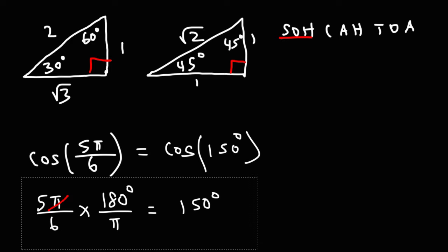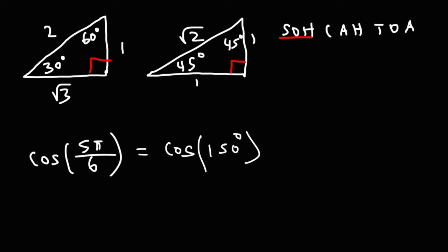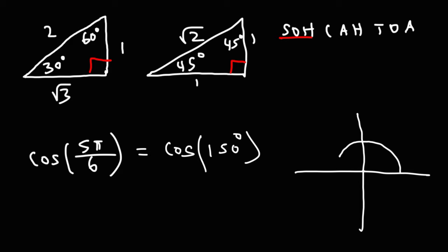You might wonder how to evaluate cosine 150, since it's not directly in our two special triangles. We plot 150 degrees — starting from the positive x-axis, 90 is here and 150 is here. Notice that 150 is 30 degrees away from the negative x-axis, which is 180 degrees, so it creates a reference angle of 30.